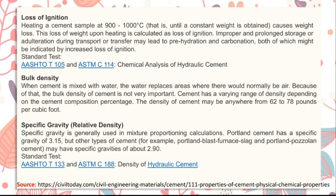Loss of ignition: heating a cement sample at 900 to 1000°C until constant weight is obtained causes weight loss. This loss of weight upon heating is calculated as loss of ignition.